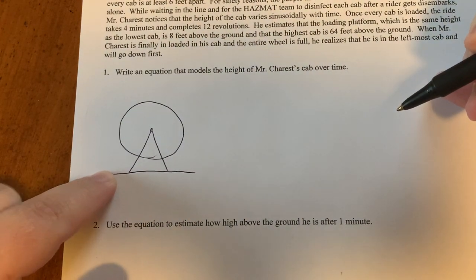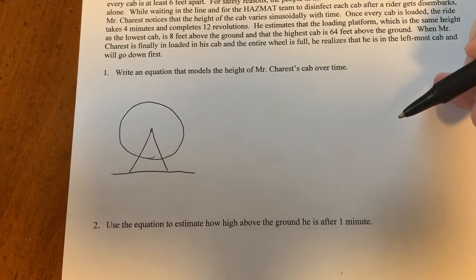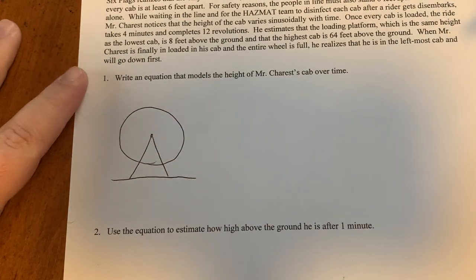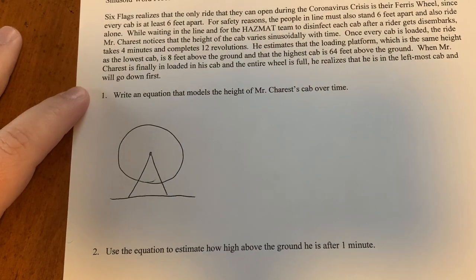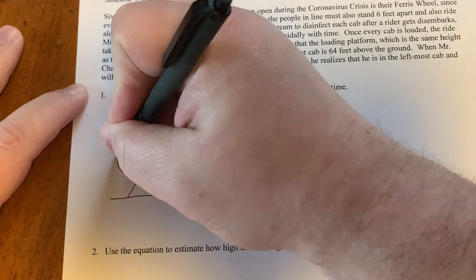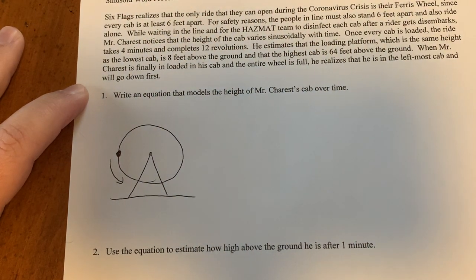So we've got the ground here, we've got the wheel, and the cabs will be on the wheel, and they will be turning. Alright? So we know that Mr. Shress starts at the leftmost cab and will be going down first. So here is the leftmost cab, and it's gonna be spinning that way. So that's what we know.